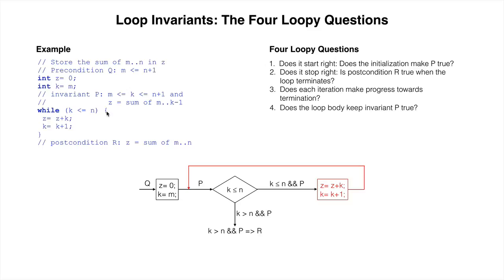The fourth and final loopy question is: does the repetend keep invariant p true? According to the flowchart, p is true before the loop condition, and if the loop condition is true, the repetend is executed. The flowchart indicates that the invariant must be true after the repetend is executed. For this loop, the fourth loopy question can be written formally as shown at the bottom of your screen: is execution of z becomes z plus k, k becomes k plus 1, with k less than or equal to n and p true, guaranteed to terminate with p true?